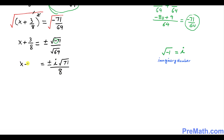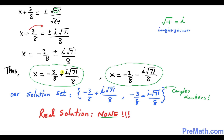On the left hand side it is x plus 3 over 8. Now I want to move the positive 3 over 8 to the other side, so this turns out to be x equals negative 3 over 8 plus or minus i times square root of 71 over 8. Our solution set gives us two solutions. Since imaginary numbers are involved, we call them complex numbers — these are not real numbers, so we have no real solution for this quadratic equation. Thanks for watching and please subscribe to my channel for more exciting videos.